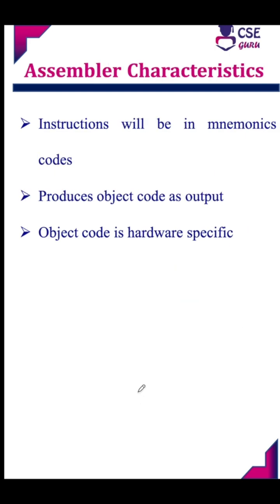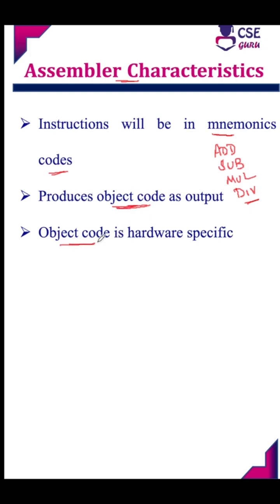Characteristics of the assembler: in an assembler, the instructions are in the form of mnemonic codes. These mnemonic codes are converted into object code. The object code produced by the assembler is hardware-specific.